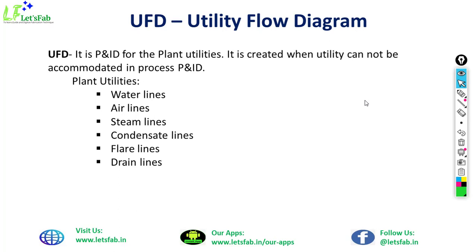The next flow diagram is the Utility Flow Diagram, or UFD. It is a P&ID diagram for plant utilities. It is similar to the P&ID diagram but is made only for plant utilities — such as water lines, air lines, steam lines, condensate lines, and drain lines. These utility lines do not involve any process; they are just used for plant utilities like cleaning water, supplying compressed air, or steam for other purposes. If utility lines are shown in the P&ID diagram, it is not necessary to make a separate utility flow diagram. But if they are not shown in the P&ID, a separate utility flow diagram must be made.